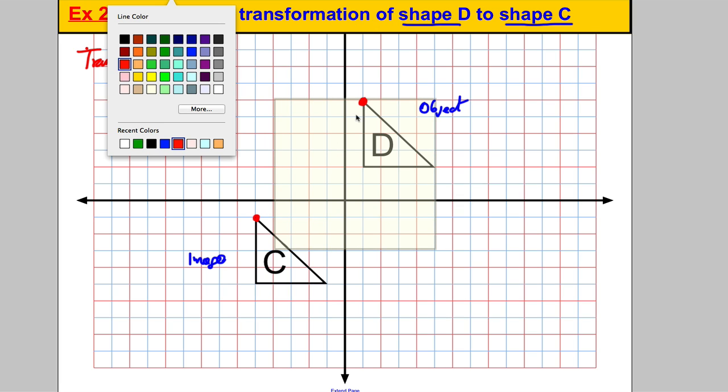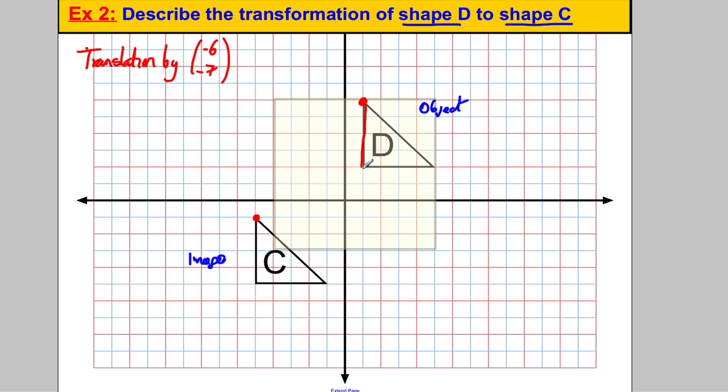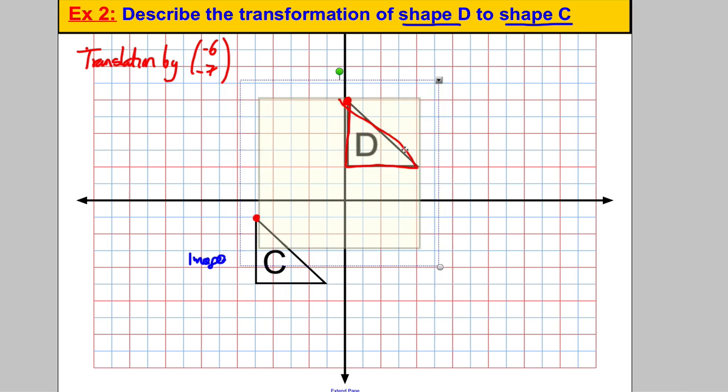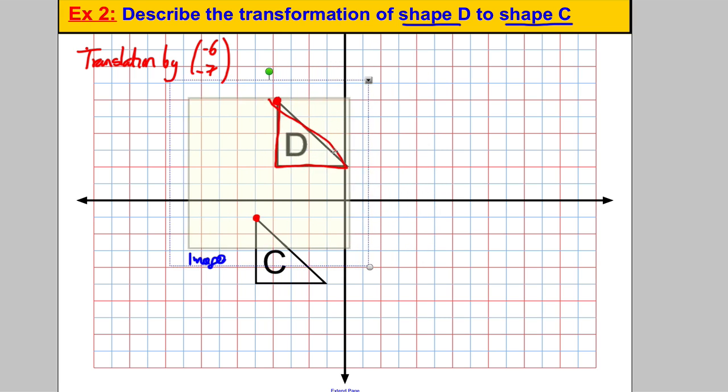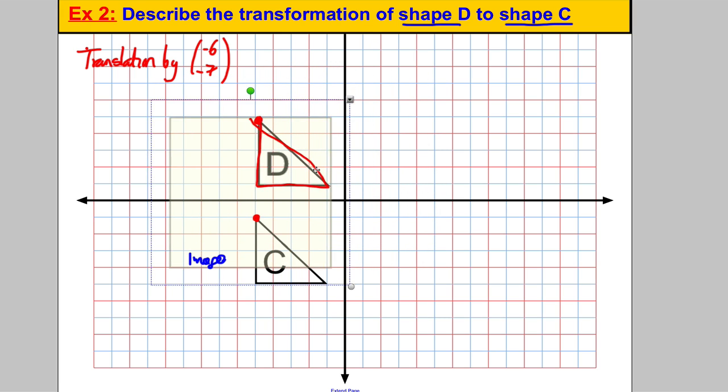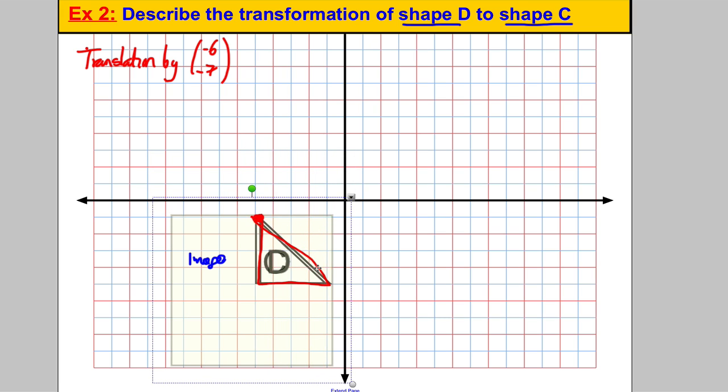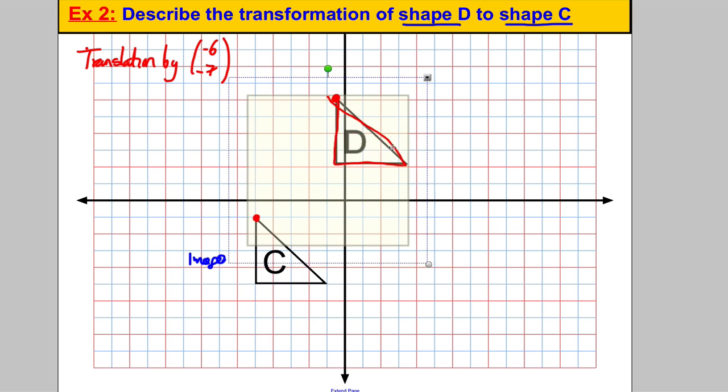Again, you could have used your tracing paper and drawn this out. I'll do it quickly. You could check: we're going one, two, three, four, five, six across and then one, two, three, four, five, six, seven down.